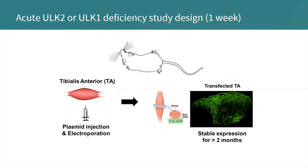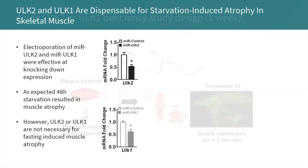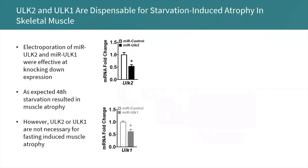The microRNAs were linked with green fluorescent protein (GFP), so we could track which muscle fibers were actually electroporated. The image on the right is a representative image depicting what those muscles look like under a microscope. To confirm the model was effective, we looked at the respective gene expression and confirmed that the plasmids encoding those microRNAs were effective at knocking down both ULK-1 and ULK-2.